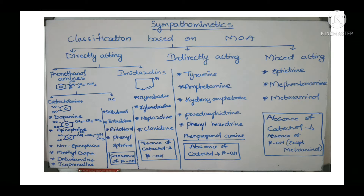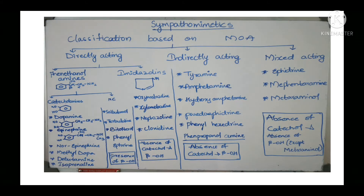Next are indirectly acting drugs. Directly acting drugs act directly on alpha or beta receptors, whereas indirectly acting drugs show their effect without acting on receptors. For example, tyramine is a precursor for norepinephrine — it increases synthesis of norepinephrine rather than directly acting on receptors. Amphetamine inhibits MAO (monoamine oxidase) and the norepinephrine transporter.